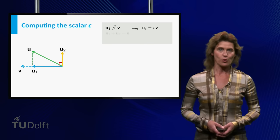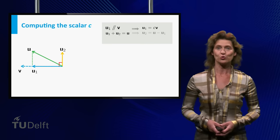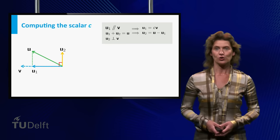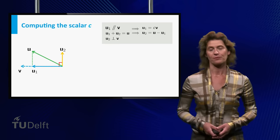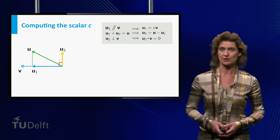Since u1 plus u2 equals u, we can conclude that u2 equals u minus u1. Furthermore, u2 and v are orthogonal. This implies that the dot product of u2 and v equals zero.